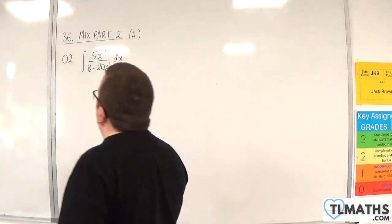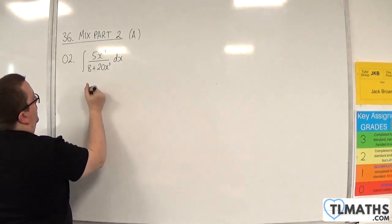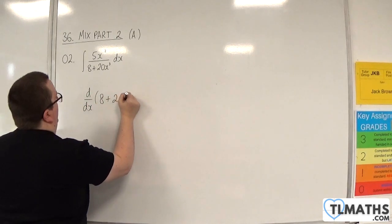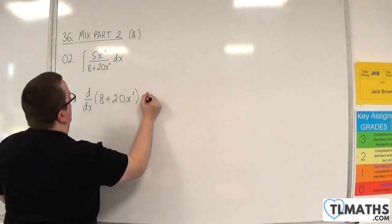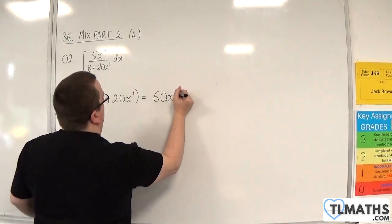The first thing you need to do is check what the denominator differentiates to. So we're going to differentiate the 8 plus 20x cubed. Now when we differentiate that, we're going to get 60x squared.